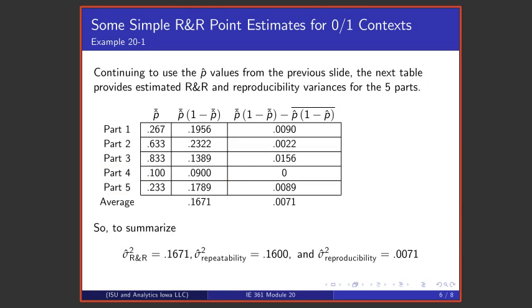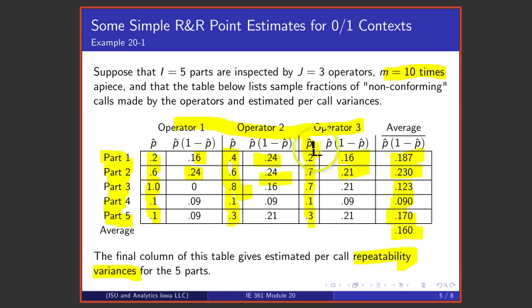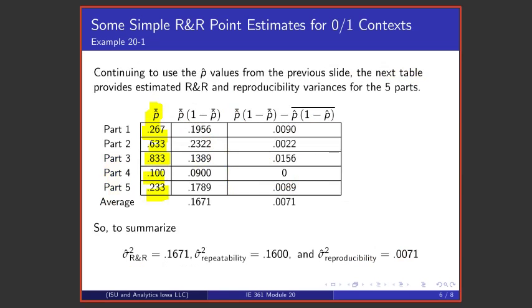Continuing to use those same p-hat values, and I've re-recorded them here. Sorry, I recorded their averages here. So this is p-hat averaged across operator one, two, and three. If I then take that average times one minus that average, I get these values. That then average to 0.1671.